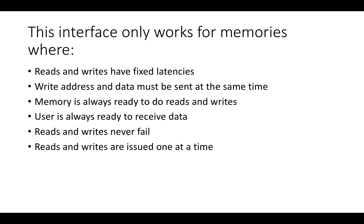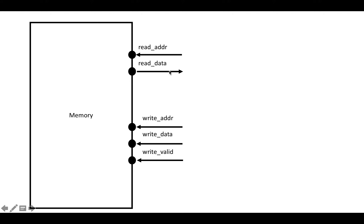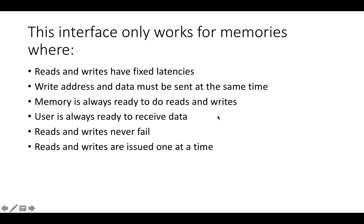What kind of memories does this simple interface work for? There are a lot of limitations. The first is that reads and writes have fixed latencies. For example, you put in the read address on some cycle and then later the read data comes out, but there are no signals from the memory to indicate when the read data is actually valid or when it corresponds to a particular earlier read address. The same applies to writes — there's no signal saying the write has completed. The user just has to know the fixed latency.